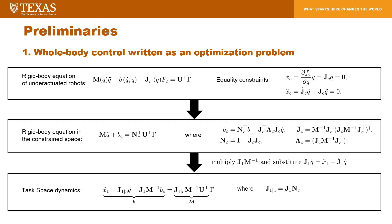Here are some preliminary studies for the proposed MPC-based approach. I want to briefly explain the optimization problem equivalent to the projection-based whole-body control. When an equality constraint exists, the rigid body dynamics of the underactuated robot can be expressed on the null space of the constraint. We obtain task space dynamics by utilizing the task Jacobian and the constraint dynamics. Given q, q-dot, and desired task acceleration, we can formulate the least-squares error problem to obtain the control command tau.